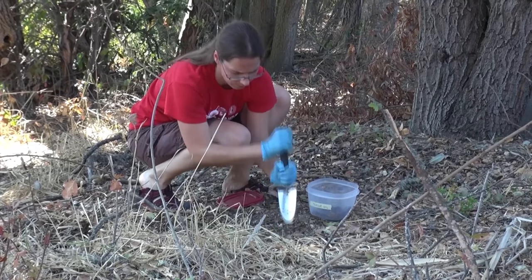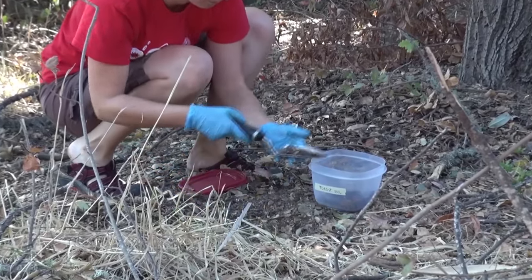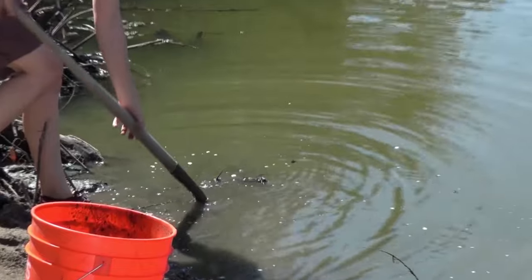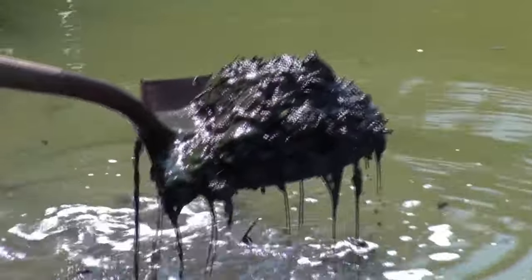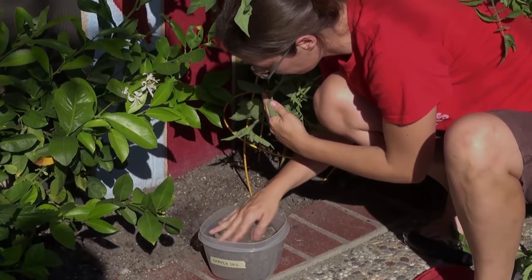To get mud for your microbial fuel cell, you can collect some topsoil from the forest, or go to the nearest pond and dig up some mud from the bottom of the lake, or simply grab some soil from your backyard.